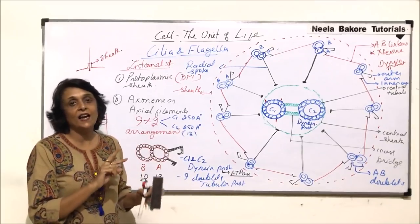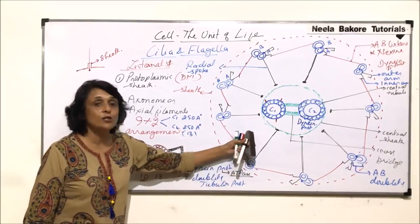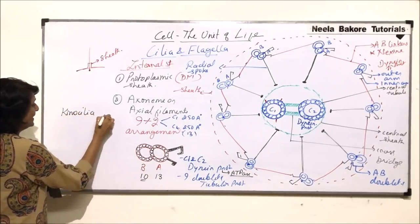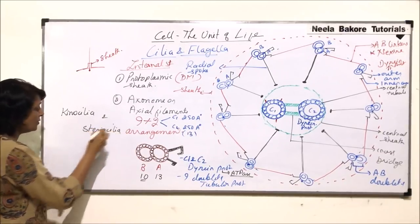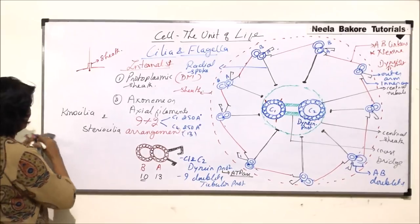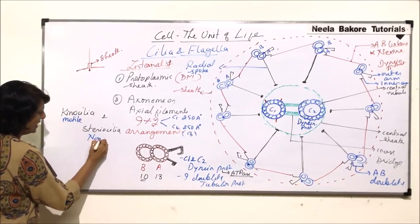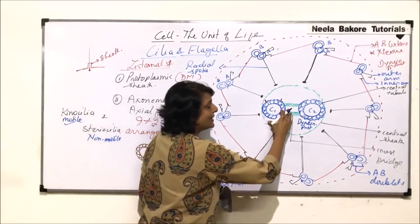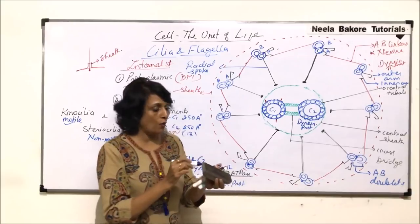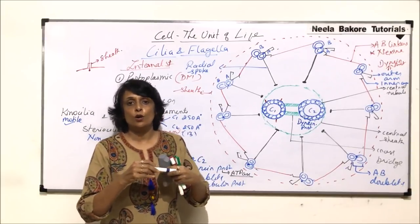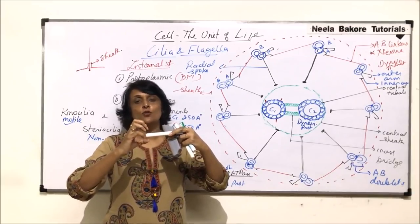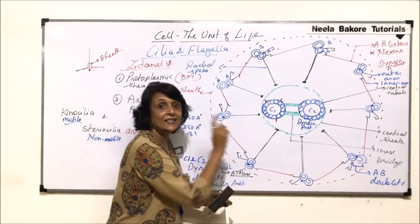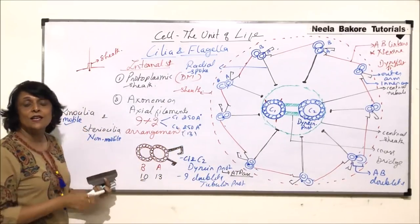We previously mentioned two types of cilia: kynocilia and stereocilia. Kynocilia are motile — they move — and therefore must have the 9+2 arrangement, because the central two microtubules are the part that actually initiates movement, like an axle. If a structure has to move, this entire central part must be present, and movement always starts with the central part.